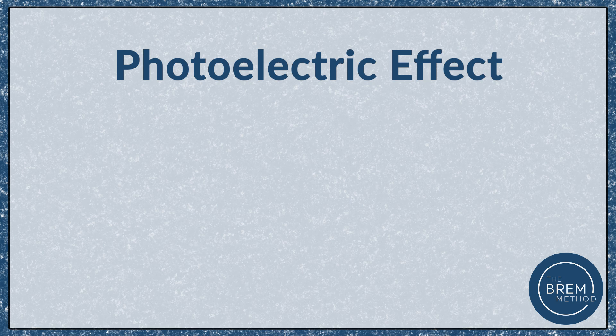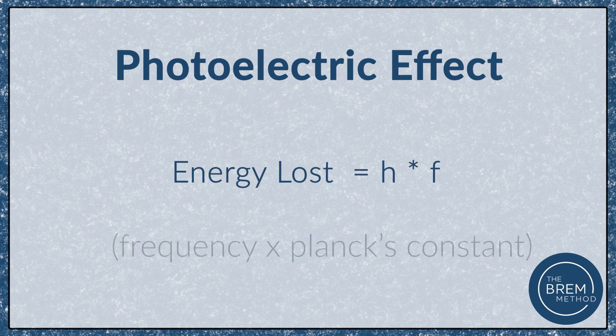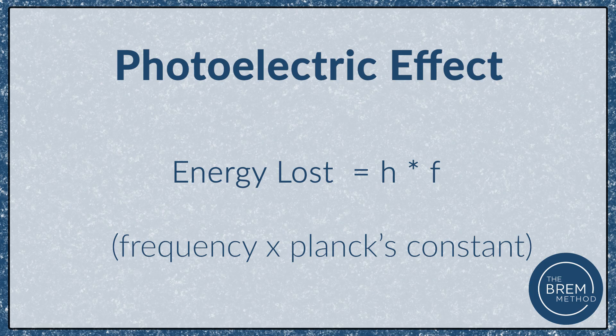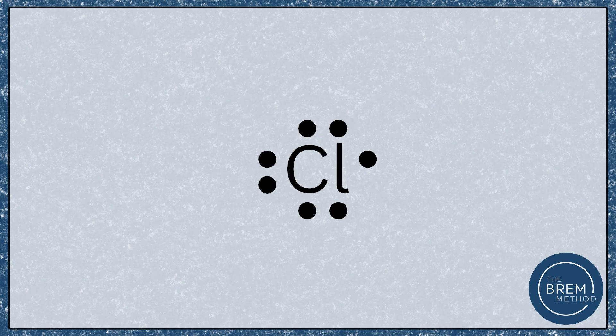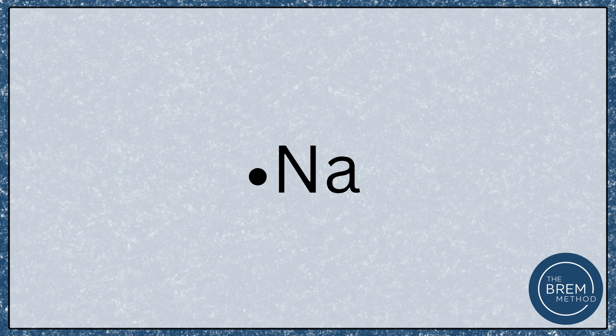This is called the photoelectric effect, and we can calculate the exact energy lost by multiplying the frequency of that electromagnetic radiation times Planck's constant. Our equation for that is E = hf. Notice there's a little physics overlap there with light — even in the most basic general chemistry we have some physics overlap. We can visualize our valence shell electrons using what's called a Lewis dot structure, which shows how many valence electrons we have for a given element or atom. For example, chlorine should have seven dots representing its seven valence electrons in neutral form, and sodium should have just one valence electron.